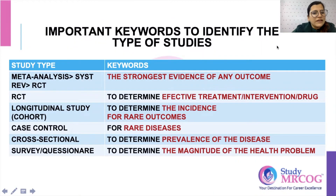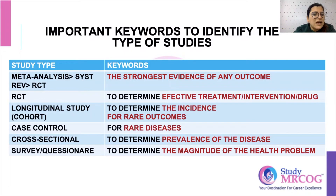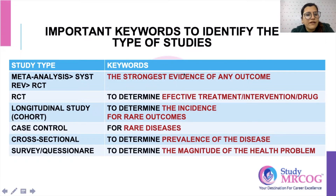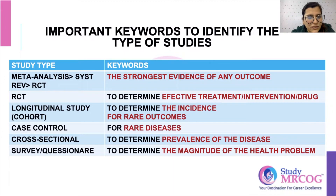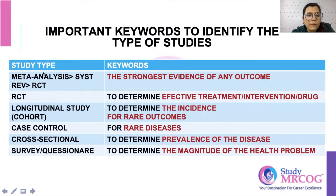There are various study types in biostatistics, classified as meta-analysis, systematic review, RCTs, cohort, and cross-sectional surveys. Rather than discussing each in detail, in this wisdom shot I will tell you the keywords to identify which study type fits a given question.